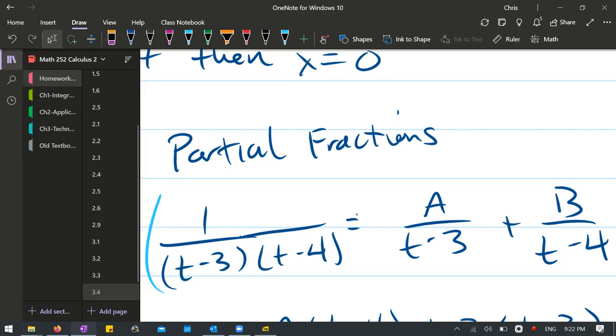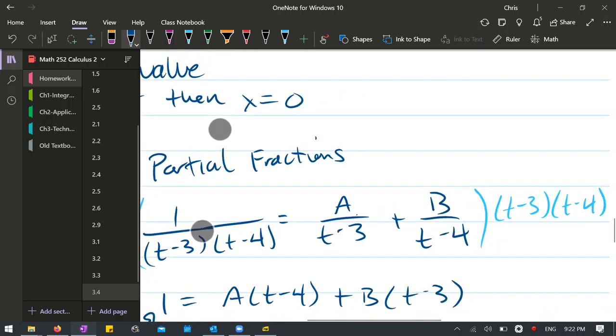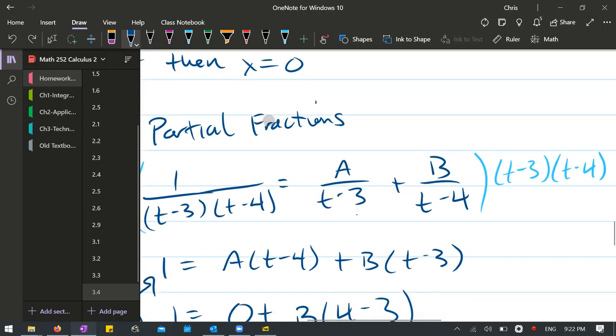How do we go about finding A and B? Well, nobody likes fractions. So we're going to multiply by the denominator, which is t minus three times t minus four. It's going to completely eliminate the denominator here, and it will eliminate the t minus three and the t minus four. But it's not going to completely cancel because the t minus three under the A is going to cancel, and we're going to be left with a t minus four as a product. Something similar happens with B.